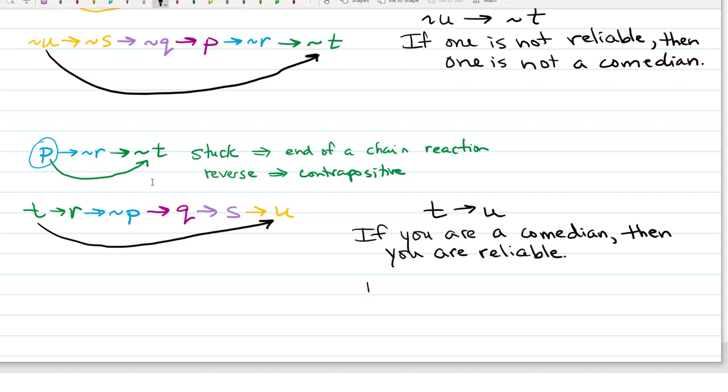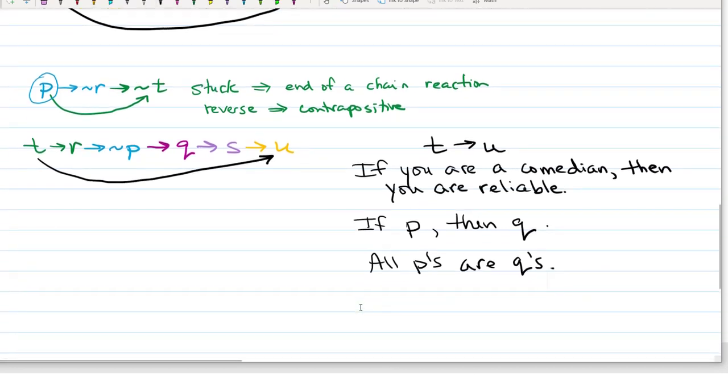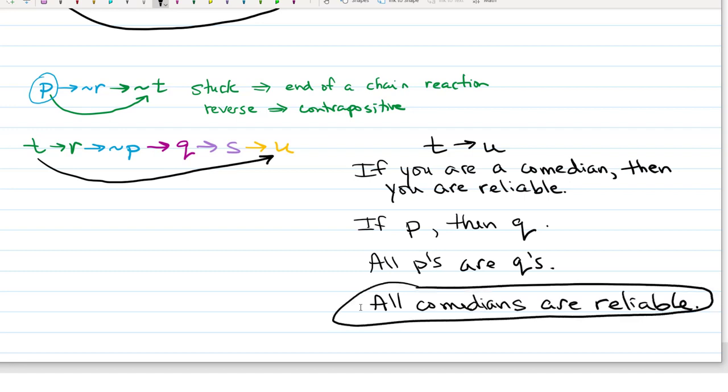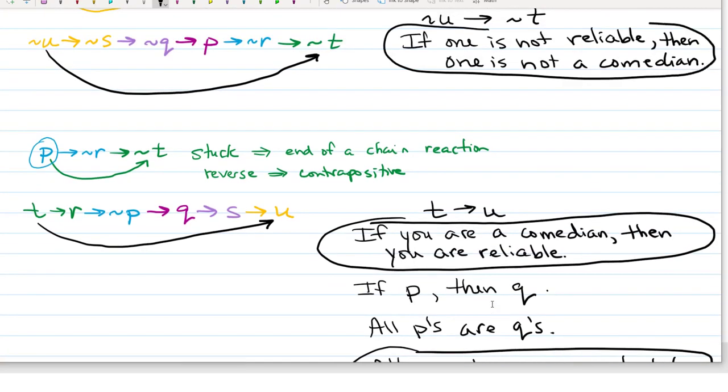And in fact, there are even other possible ways that we could state the same logical conclusion. For example, we know that if P, then Q is equivalent to all P's are Q's. So another person could come to the conclusion, all comedians are reliable. And that means the same thing. So lots of ways to state the final conclusion that uses all of the facts that we were given.